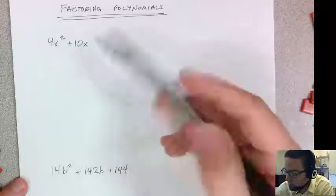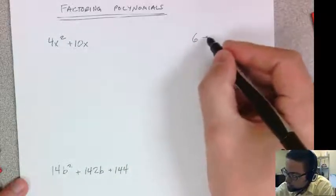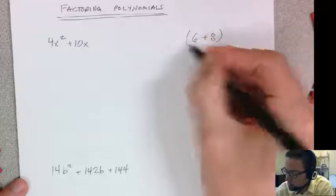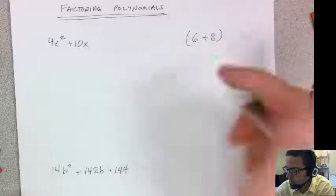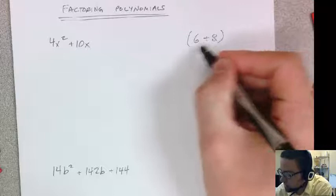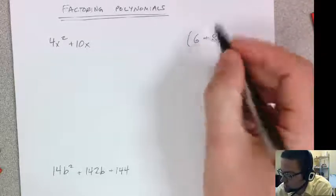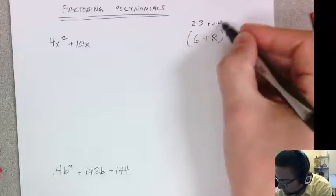So 4x squared plus 10x. When you look at something like 6 plus 8, if I were to try to take something out of that, it's called the greatest common factor of these two numbers. So that would be a 2 in this case. I could take it, so I look at this is 2 times 3 and this is 2 times 4.